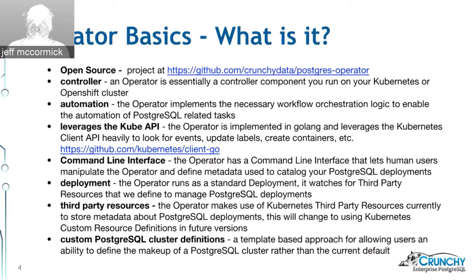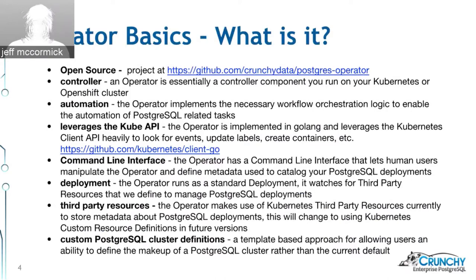This Postgres operator is different from some other operators in that it has a command line interface that humans can use to cause the operator to take action. From the command line, the operator works a lot like kubectl or the OC command — it allows you from your desktop to interact with the Kubernetes or OpenShift API and get information back from the cluster.